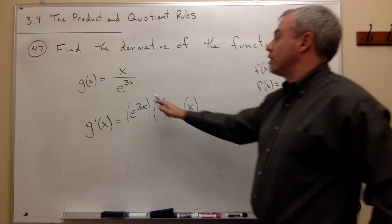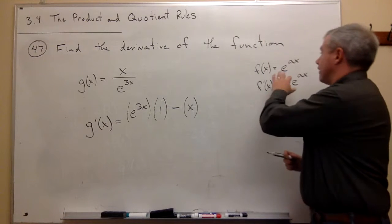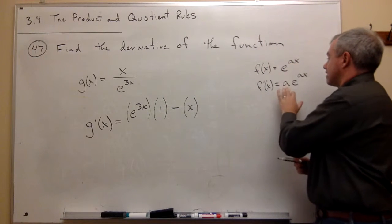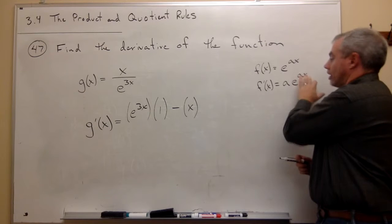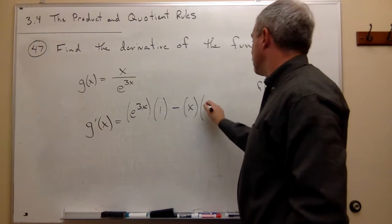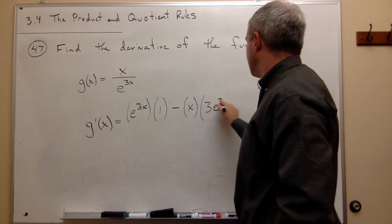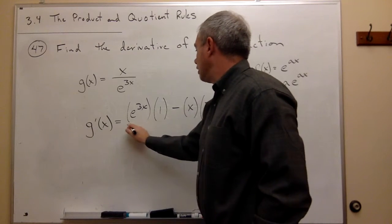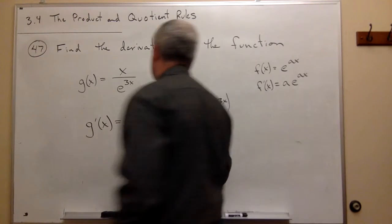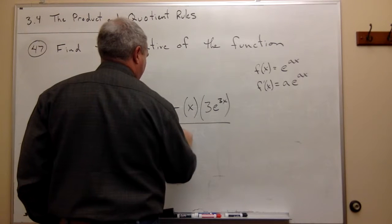But in this case, we have that a is 3, so what's the derivative of e to the 3x? It would be 3e to the 3x. So we get 3e to the 3x, all divided by the bottom, which is e to the 3x, quantity squared.